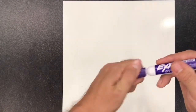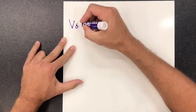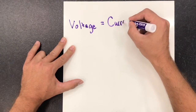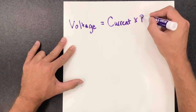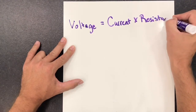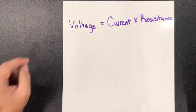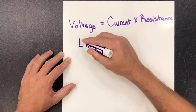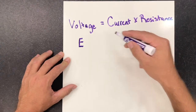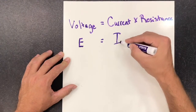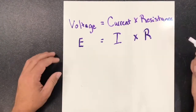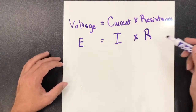Now we're going to figure out Ohm's Law. When we're talking about Ohm's Law, we're talking about voltage equals current times resistance. Voltage is represented by the letter E, current by the letter I, and resistance by the letter R. So a lot of people say Ohm's Law as E equals IR.